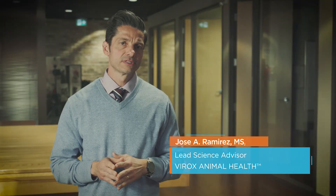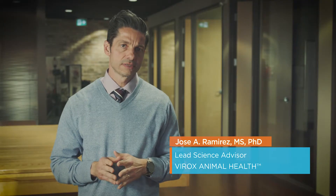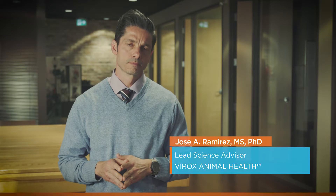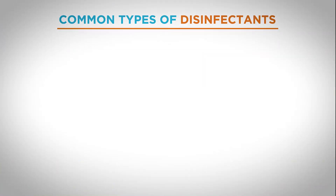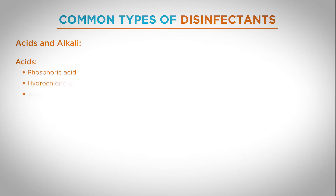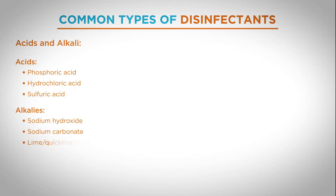I'd like to talk about the different types of disinfectants we've seen out in the field. The first class of disinfectants, known since antiquity, are acids and alkalis. Acids include phosphoric acid, hydrochloric acid, and sulfuric acid. Alkalis include calcium or sodium hydroxide, sodium carbonate, or quicklime, which is calcium oxide.